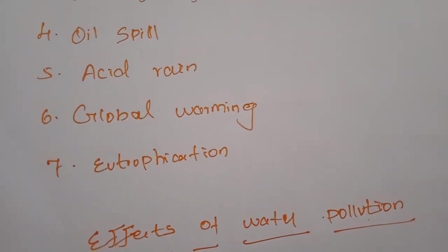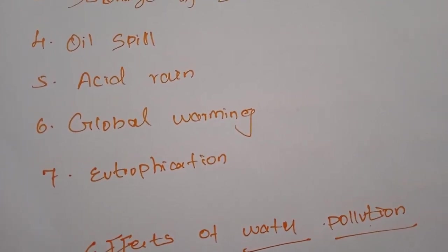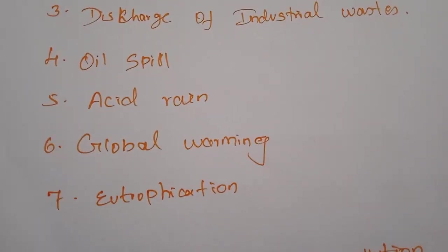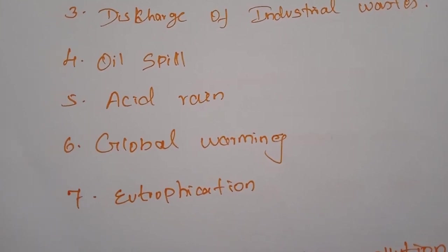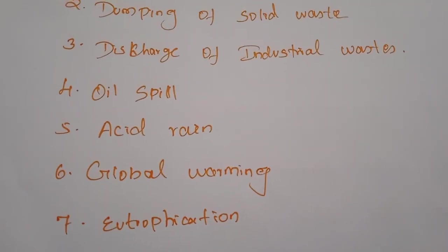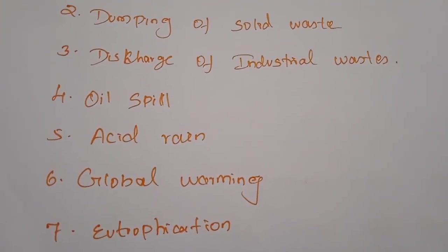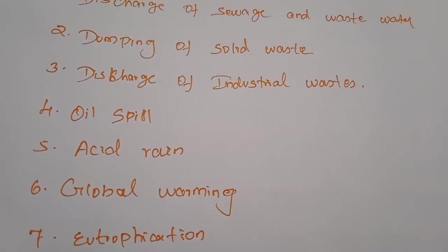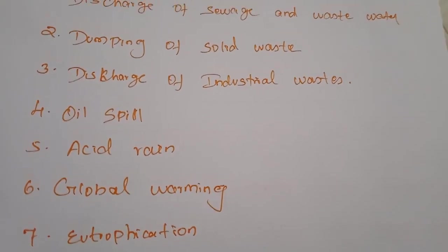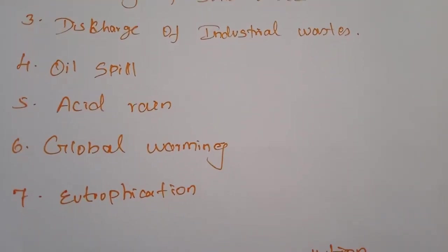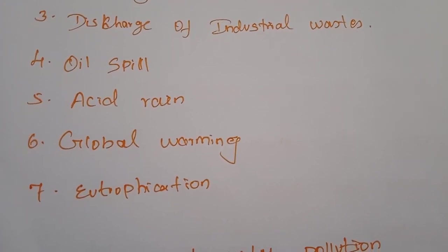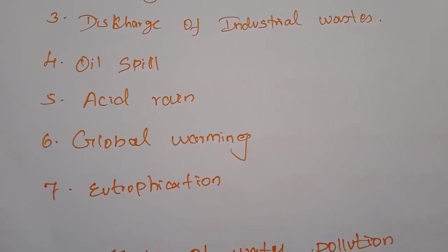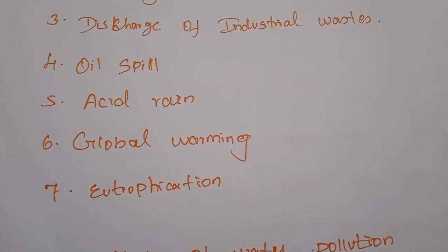Next, global warming. Due to global warming, there is an increase in water temperatures and as a result, aquatic plants and animals are affected. Because of global warming the earth gets very hot, and water temperatures increase. Some aquatic animals require normal water temperatures to survive, and if temperatures rise they will never get the chance to live in suitable waters. Next, eutrophication. Eutrophication is an increased level of nutrients in water bodies, which results in a bloom of algae. It also depletes the oxygen in water, which negatively affects fish and other aquatic animal populations.